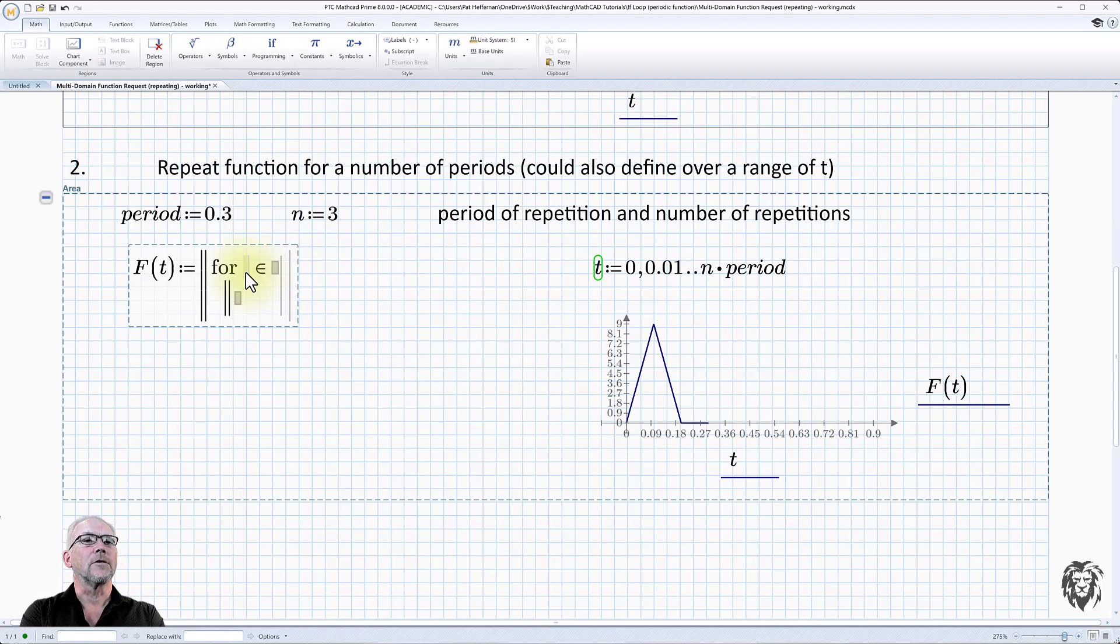Within the for loop, we have a couple different parameters. The first thing we need to do is to give it a variable that is going to increment, and then we have to give it the range over which it will increment. In this case, we want to go from 0 to n minus 1, because 0 would be the first increment, 1 would be the second repetition, and 2 would be the third repetition, which is what we want.